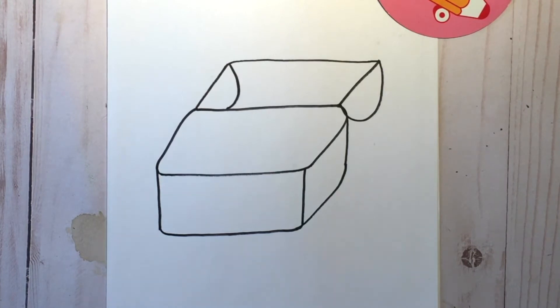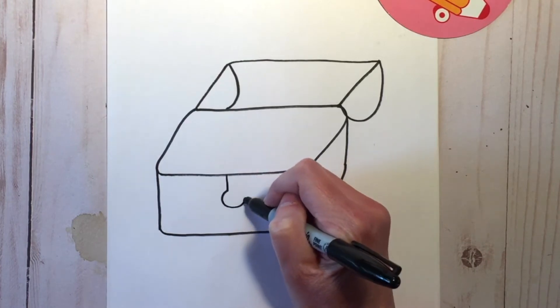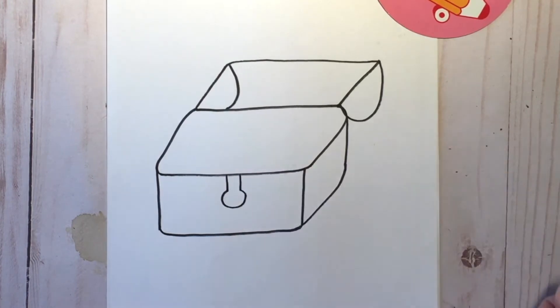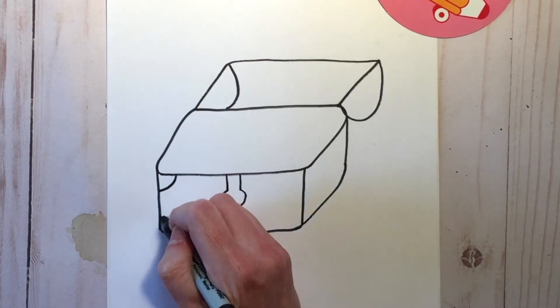So now we have the actual chest with the open top, now this is going to be the lock part of it. And then in each corner you're going to do a little curve.